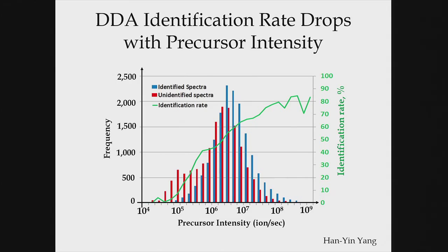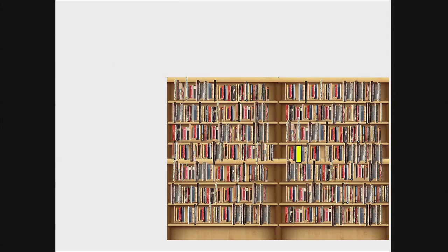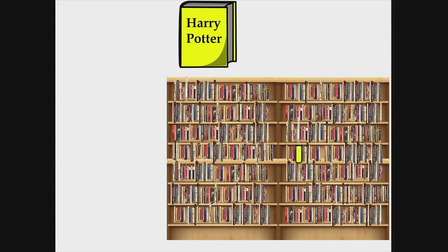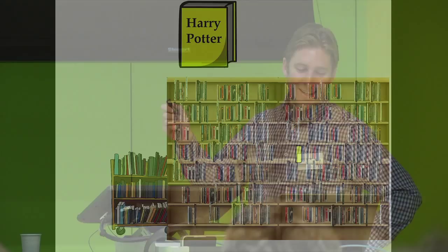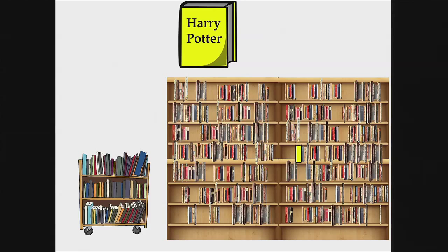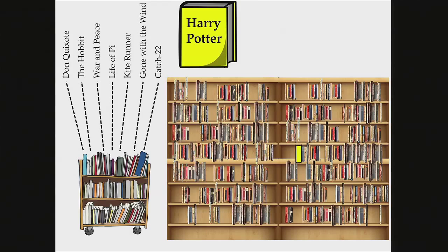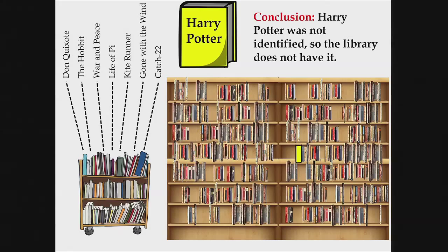Here's the analogy I like: imagine walking up to a library interested in finding Harry Potter. Harry Potter is right there. But the DDA workflow would be to randomly select some books, read the spines to figure out what a subset are, get a list of identifications, and then ask 'Is Harry Potter in there?' — walking out without it even though it was there, because it wasn't randomly sampled. The false conclusion is that Harry Potter is not in the library.